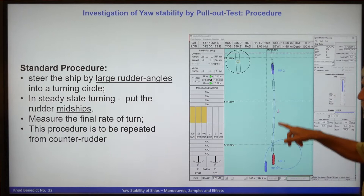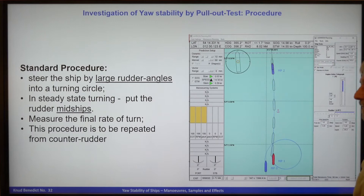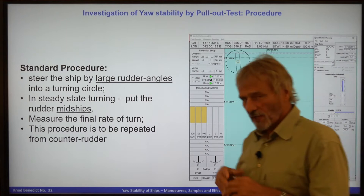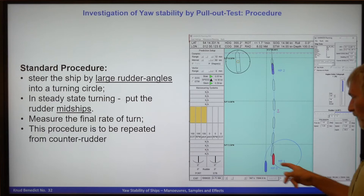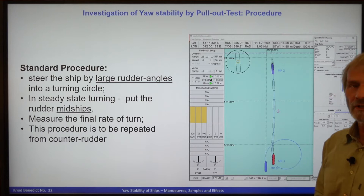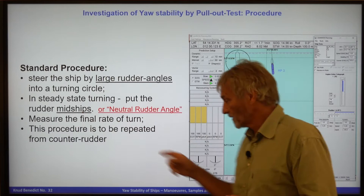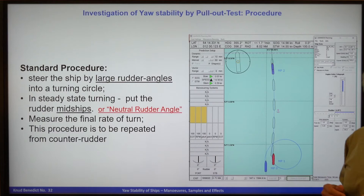After the turning motion, the turning motion stops and the ship goes on a straight track or continues turning — we will see. Importantly, we have to measure the final rate of turn; in this case it is nearly zero. The procedure must be repeated from counter rudder: beginning with maybe a starboard turning circle, you should do the same thing for a port turning circle. In some cases, instead of rudder midships, it might be better to use a neutral rudder angle to really steer the ship on a straight track.